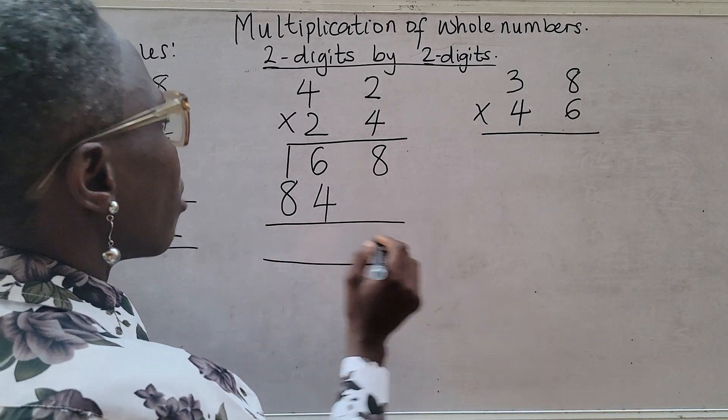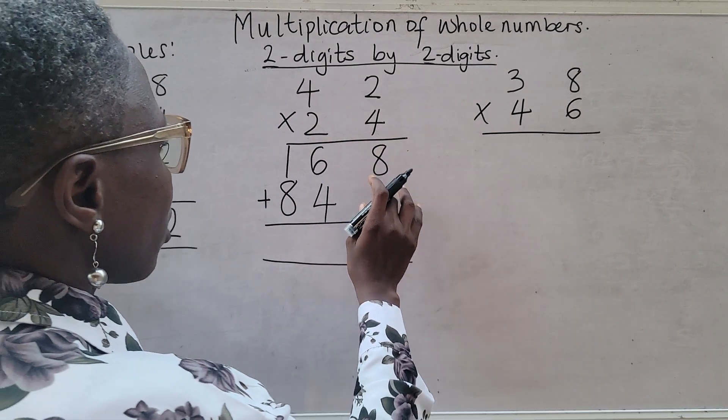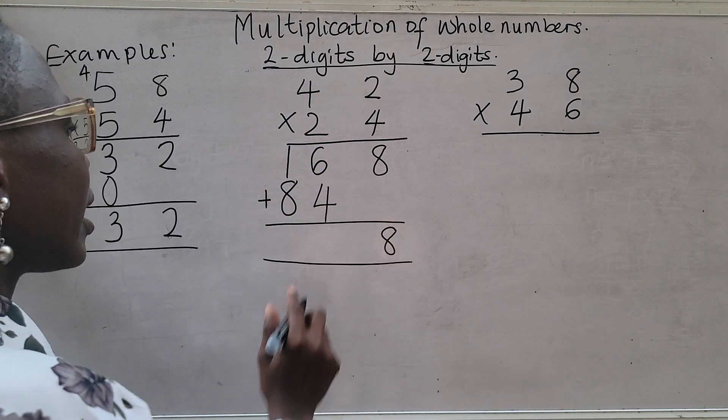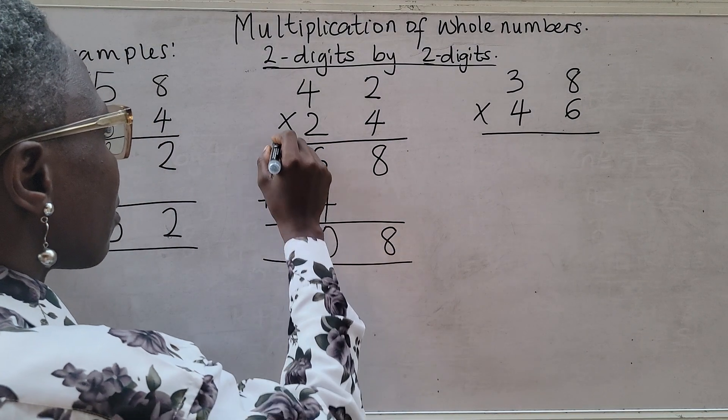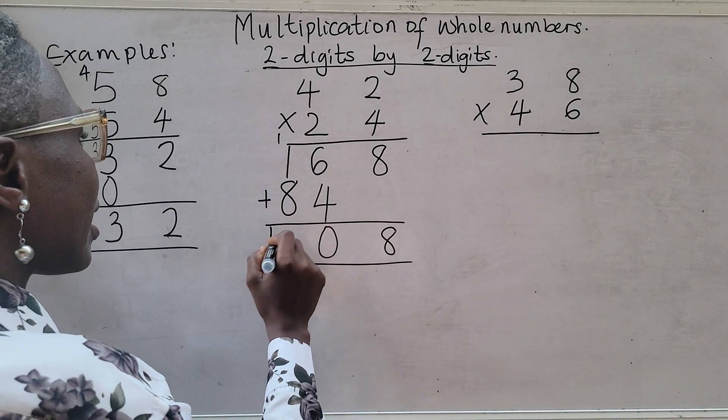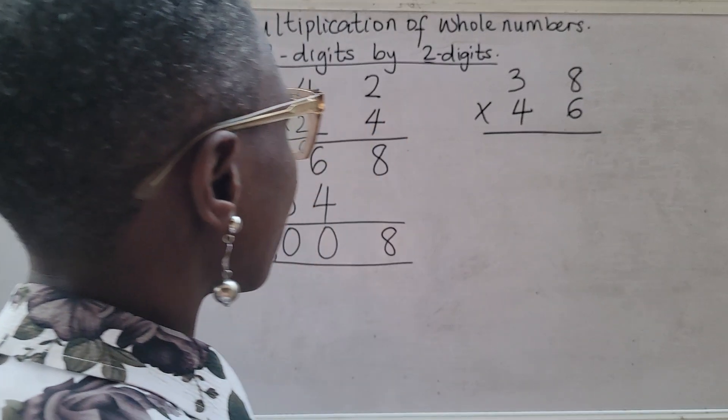Like I explained, please make sure you arrange your numbers. At this point you will add up. So eight plus nothing is eight. Six plus four is ten. You have your zero and one. One plus eight is nine plus one, that's ten. So your answer is 1,008.